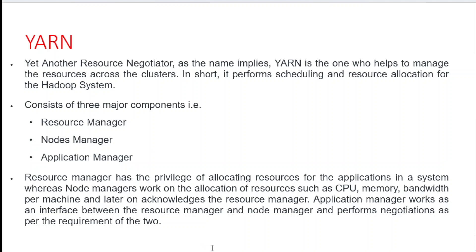The Resource Manager has the privilege of allocating resources for all applications. The Node Manager works on the allocation of resources such as CPU, memory, and bandwidth, and then acknowledges the Resource Manager. The Application Manager works as an interface between the Resource Manager and the Node Manager, performing negotiations as per requirements. YARN is very important for allocating resources, checking memory, and checking bandwidth.